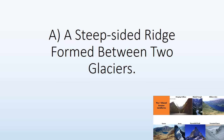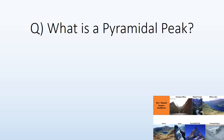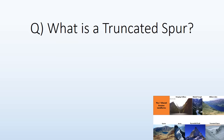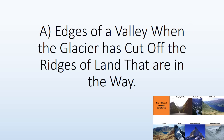An arête is a steep-sided ridge formed between two glaciers. A pyramidal peak is a pointed mountain peak formed by three or more glaciers eroding to form a pyramidal shape. A truncated spur is formed at the edges of a valley when the glacier has cut off the ridges of land that are in the way.